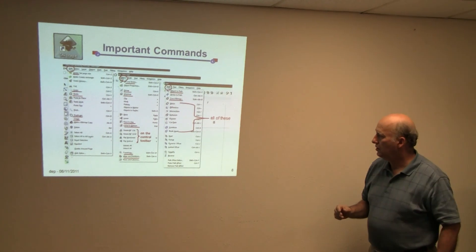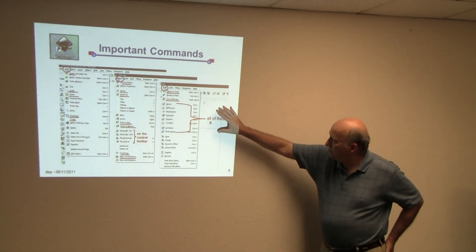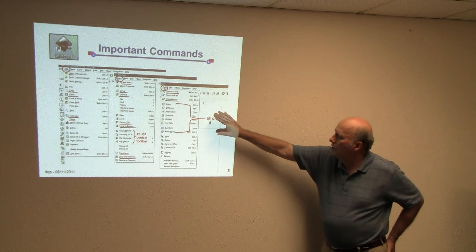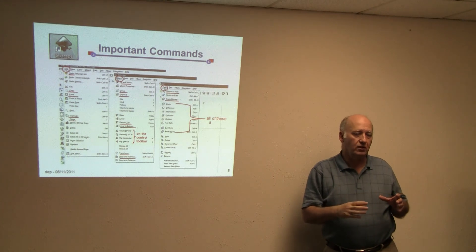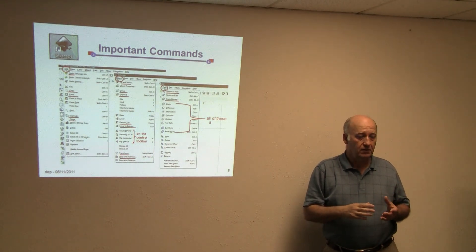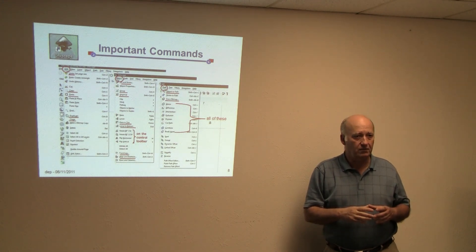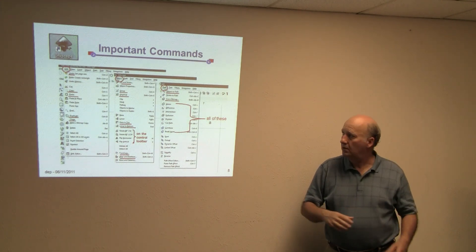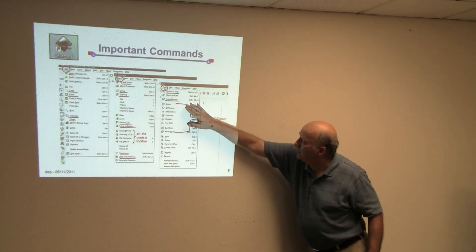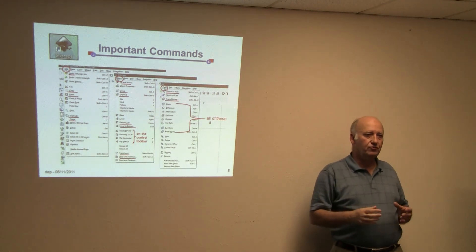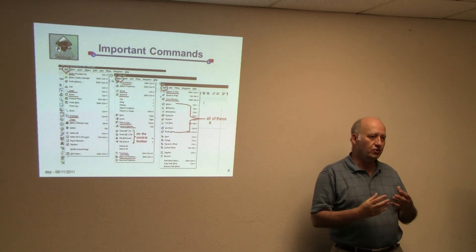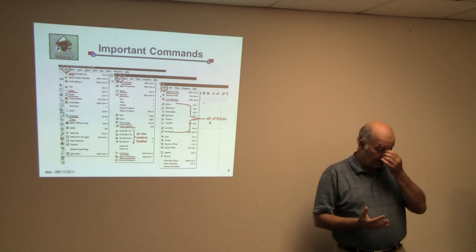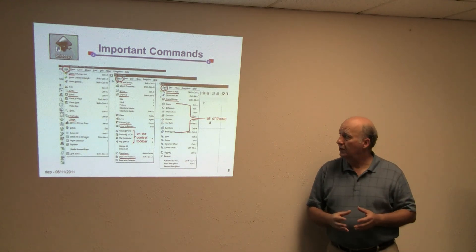Transform and Align and Distribute — you will spend a lot of time in Align and Distribute. And if you're doing anything rotating things, you'll be in the Transform. Then the Path command: some important ones are Object to Path. That's where you take a closed object — like a circle has a path. Text is an object and doesn't necessarily have a path, but you can make it have one. Trace Bitmap is when you bring in pictures and turn them into outlined vectors.